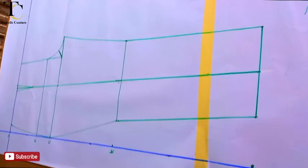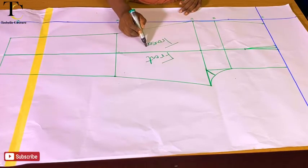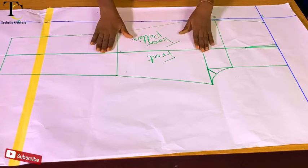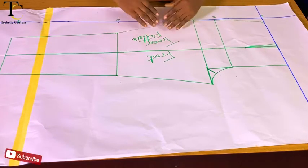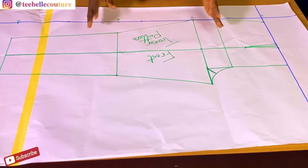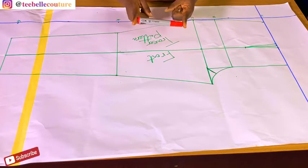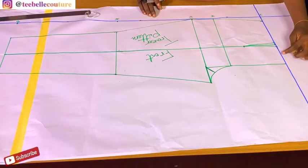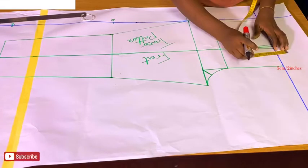On this same pattern paper is where I'm going to be drafting my back basic trouser. You can choose to trace out your front basic trouser first because it is going to be my guideline in drafting the back basic trouser. I have the red marker for my back basic trouser. The first thing I'm going to do is to go in from the center front by two inches, which is five centimeters.